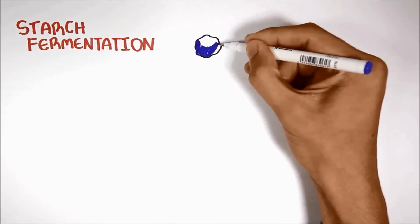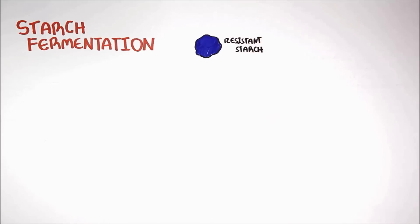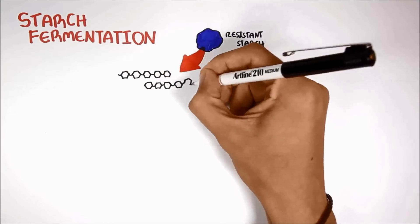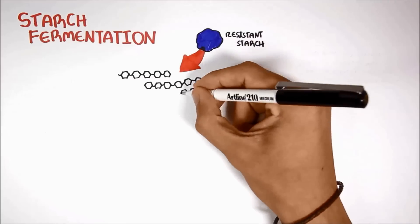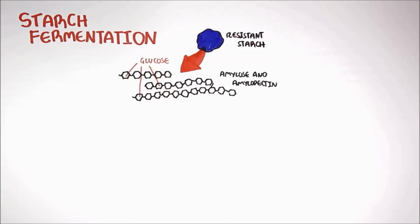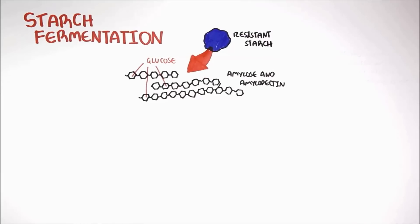Starch that has resisted digestion in the small intestine and reach the colon are called resistant starch. Resistant starch will undergo fermentation by bacteria in the colon. Resistant starch are made up of amylose and amylopectin, which are two forms of glucose polymers.